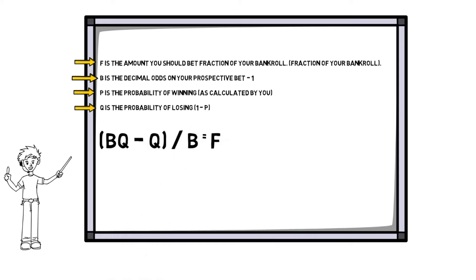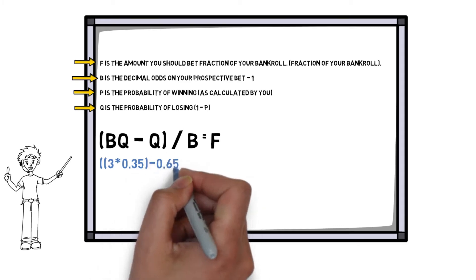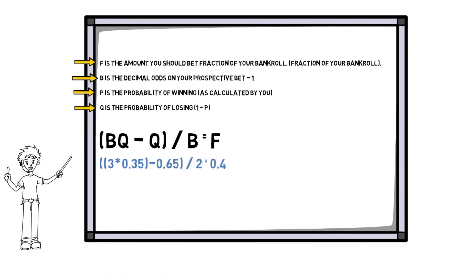Based on the Kelly Criterion for this wager, despite the fact that the possibility of losing is higher than the possibility of winning, you should be staking 40% of your wagering bank.